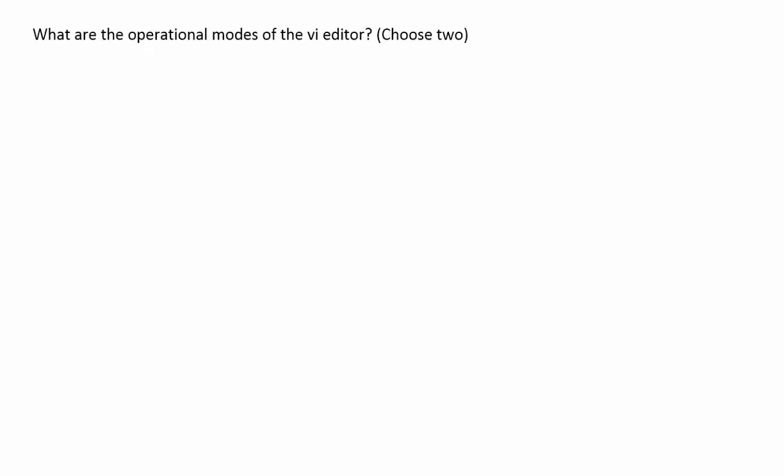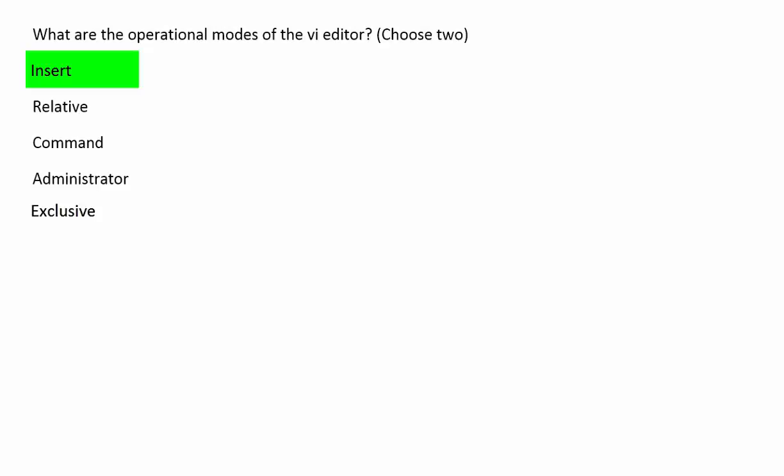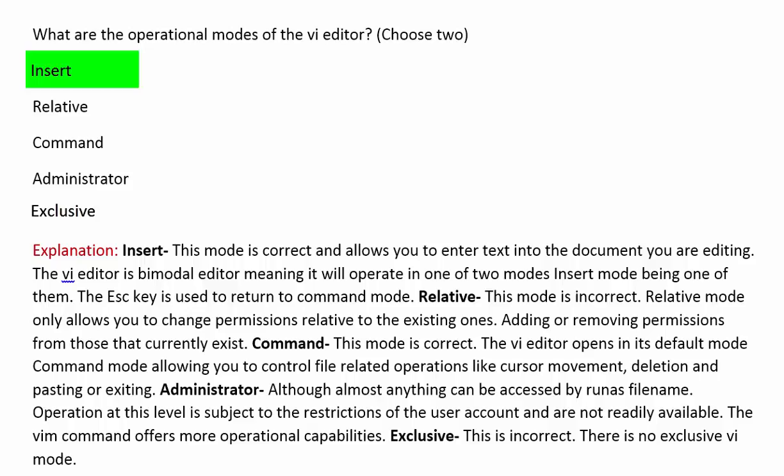What are the operational modes of the VI Editor? Choose 2. Insert — this mode is correct and allows you to enter text into the document you are editing. The VI Editor is bimodal, meaning it will operate in one of two modes, with Insert mode being one of them. The escape key is used to return to command mode.